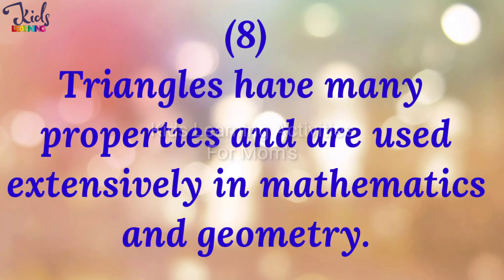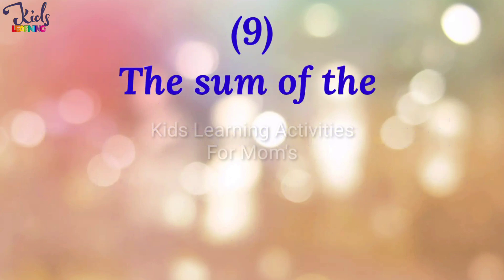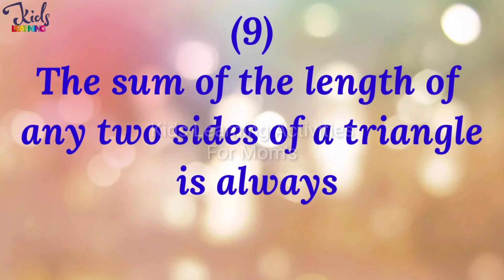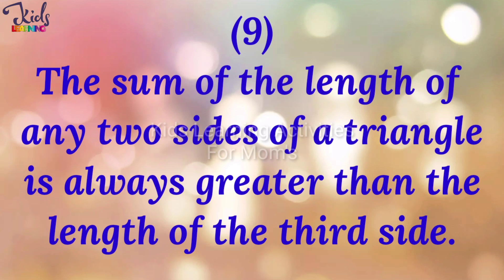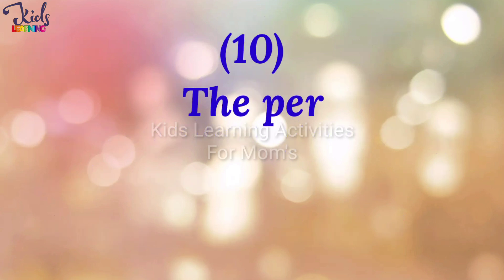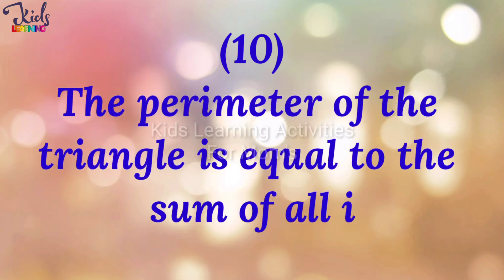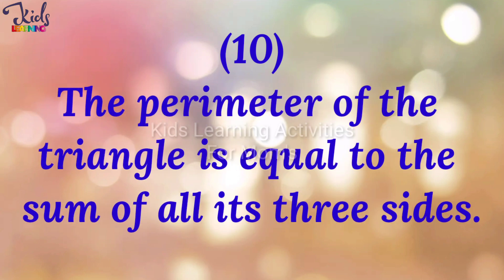Triangles have many properties and are used extensively in mathematics and geometry. The sum of the lengths of any two sides of a triangle is always greater than the length of the third side. The perimeter of the triangle is equal to the sum of all its three sides.